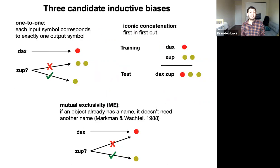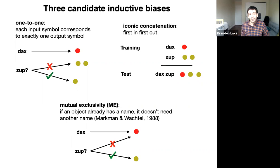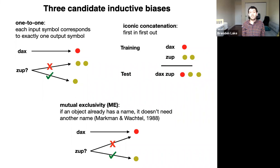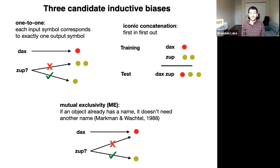To summarize: we found hints of three inductive biases in people's mistakes. First, a one-to-one bias — for each input symbol, people thought there would be one corresponding output symbol. Second, iconic concatenation — a first-in, first-out preference, where if handling DAX ZAP for the first time, people naturally do DAX then ZAP. Third, mutual exclusivity — a long-standing concept from developmental psychology: if an object already has a name, it probably doesn't need another. This bias is also implicit in participant responses, as they tended to always produce something new for new commands.